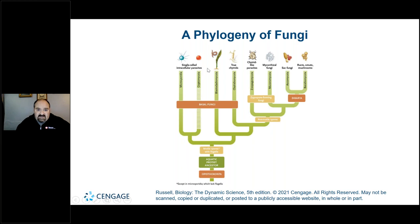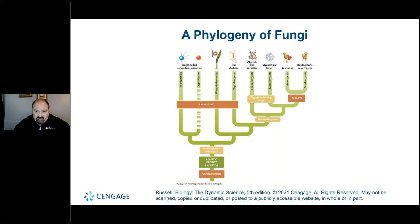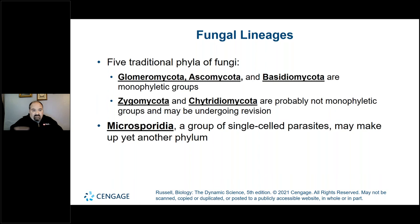You can think of the ABCs of fungi: Ascomycota, Basidiomycota, Chytridiomycota, then Glomeromycota and Zygomycota — A, B, C, G, and Z. That helps you remember these phyla. You will need to know some very basics regarding the differentiation between these types of phyla of the fungi.